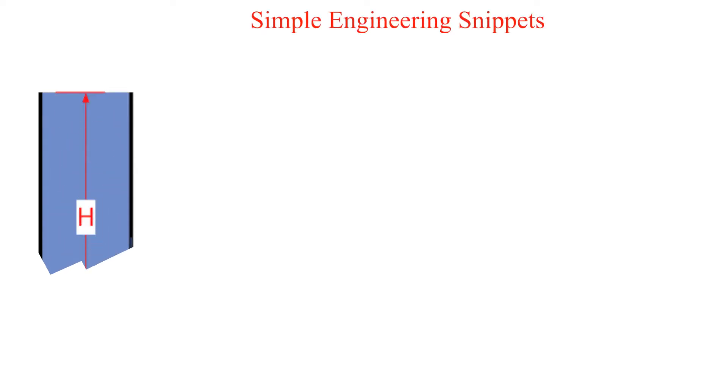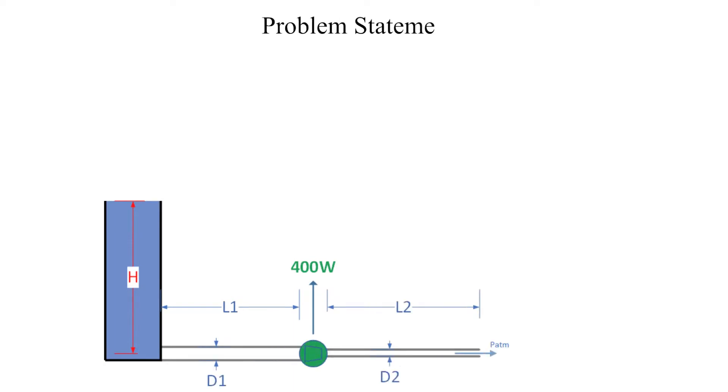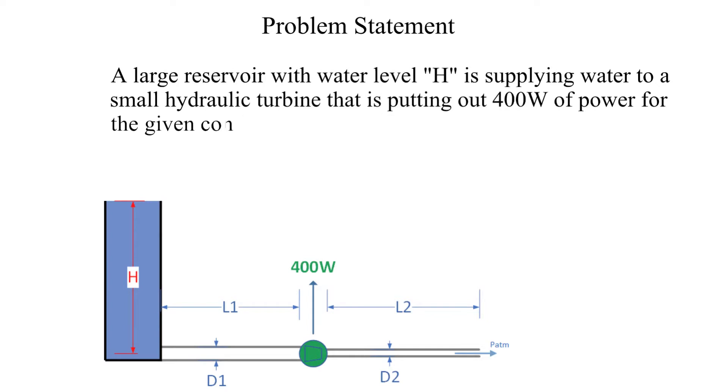Welcome to another instructional snippet. In this snippet we will be calculating the volumetric flow rate through a hydraulic turbine and its connecting pipeline. Here is the problem statement. Note that the turbine output is 400 watts of power. Also note that we will be working in SI units.